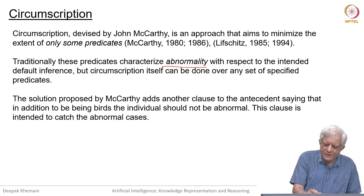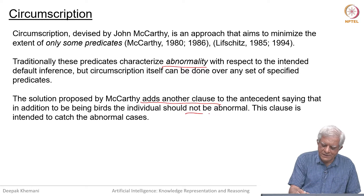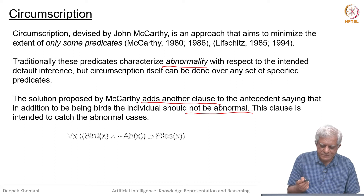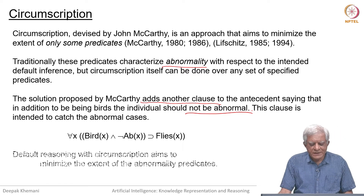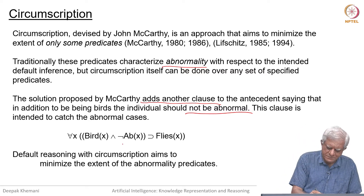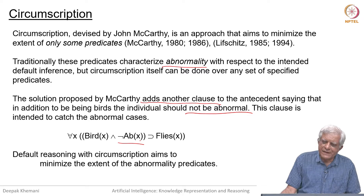So when we have a rule, McCarthy's approach adds another clause to the antecedent saying that, in addition to being birds for example, the individual should not be abnormal. This clause is intended to catch the abnormal cases. So this is the sentence in circumscription: for all X, if X is a bird and X is not abnormal, then X flies. What we do in circumscription is to minimize the extent of the abnormality predicate — the AB predicate.